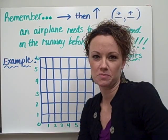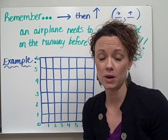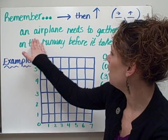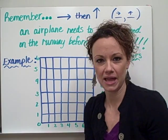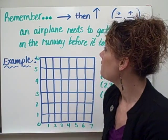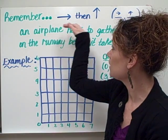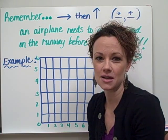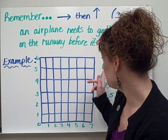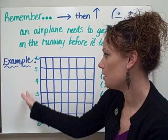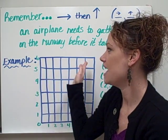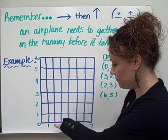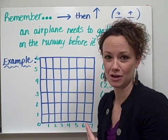I like to use this example often with my students to help them remember which number comes first when graphing their coordinates using their ordered pairs. So I'd like you to think of the example of an airplane. Think of how an airplane takes off. First, it must travel straight on the runway and gain speed until it takes off up into the air. Because a lot of times people go up first and then over. But you need to remember, just like an airplane travels, you need to go horizontally first to gain your speed, and then you may go up.